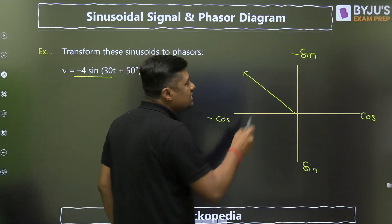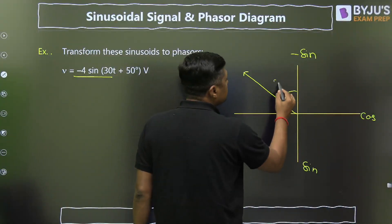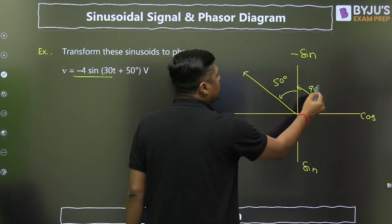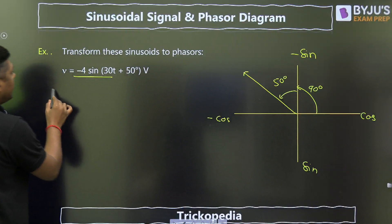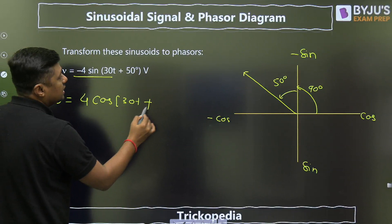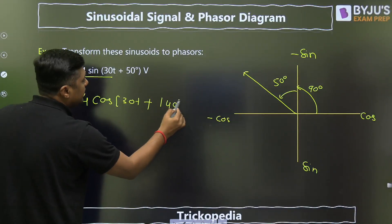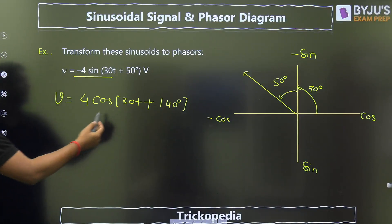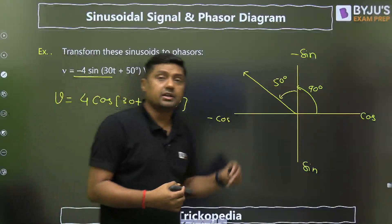Now, you can write this is the plus 50 degrees and this is 90 degrees. So that total angle is 140 degrees. Then you can also write like that: V is equal to 4 cos of 30t plus 140 degrees. Directly you can from the diagram convert it in cos or in sin or in minus cos.